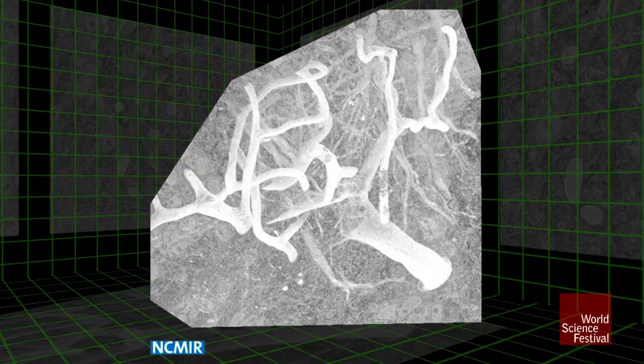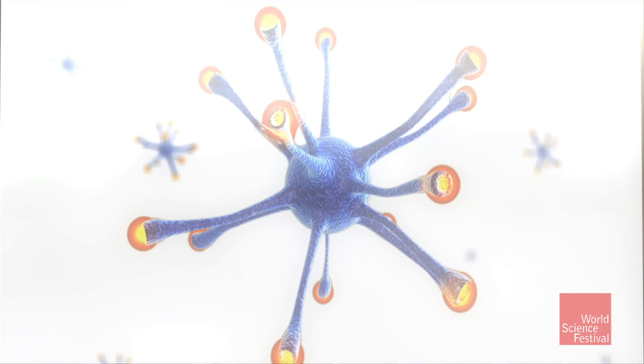These are called glia. There has to be a lot of other communication going on in the brain. There are no wires, no hard drives, no digital code.